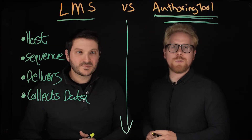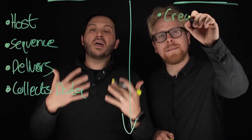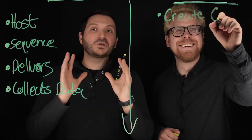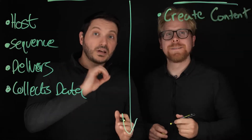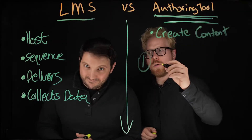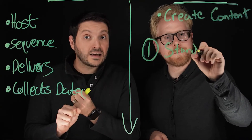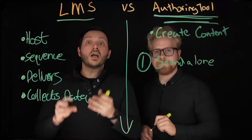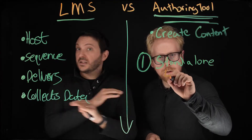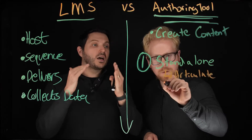What does an authoring tool do? An authoring tool allows you to create content that you can put on your learning management system. There are two types of authoring tools. The first is the standalone authoring tool — basically something like Articulate or Adobe Captivate. These are separate softwares whose whole purpose is to create content. That's all they do — all the reason they exist, like Adobe Captivate, is for you to create content.